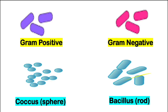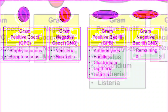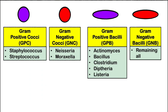Gram positive bacteria divide into Gram positive cocci and Gram positive bacilli; Gram negative into Gram negative cocci and Gram negative bacilli. In Gram positive cocci: Staphylococcus and Streptococcus (all species). In Gram negative cocci: Neisseria species and Moraxella. In Gram positive bacilli: Actinomyces, Bacillus, Clostridium, Diphtheria, and Listeria. In Gram negative bacilli: all remaining bacilli such as E. coli, Klebsiella, Salmonella, Shigella, and Proteus.